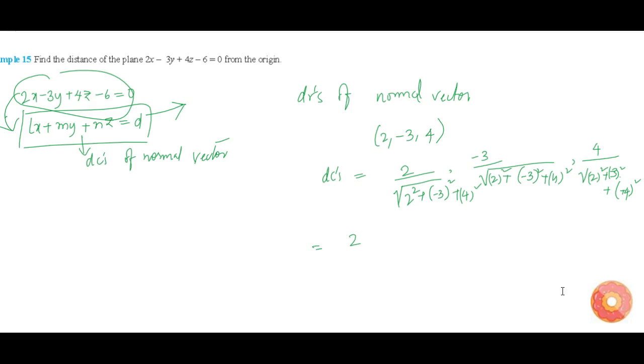Which is equal to 2 by under root of 29, minus 3 by root of 29, and 4 by root of 29.